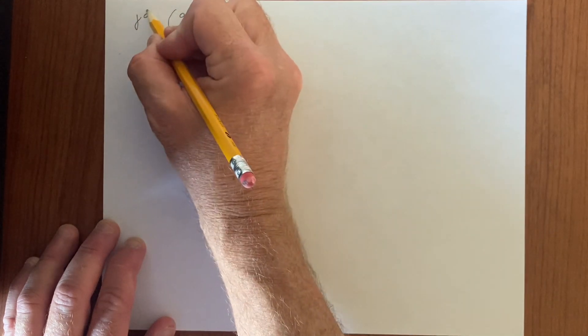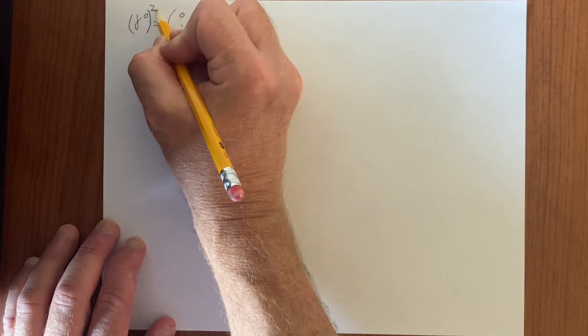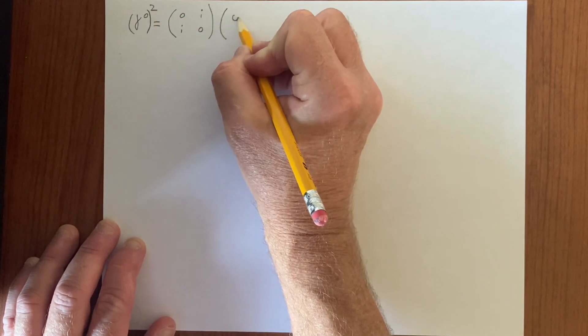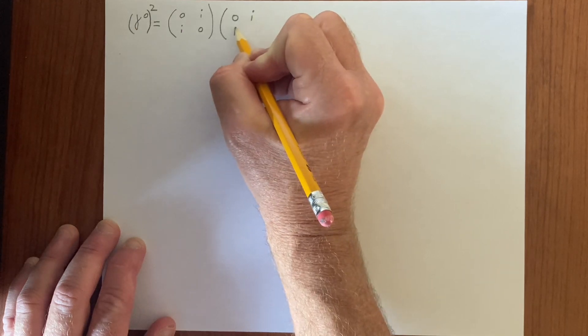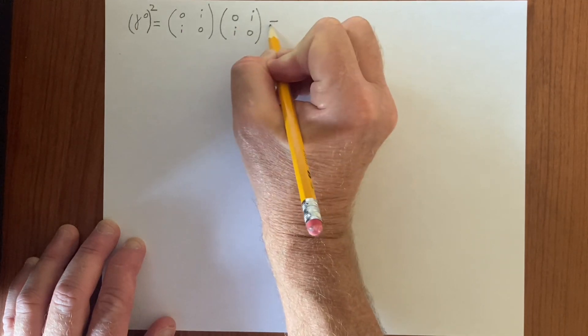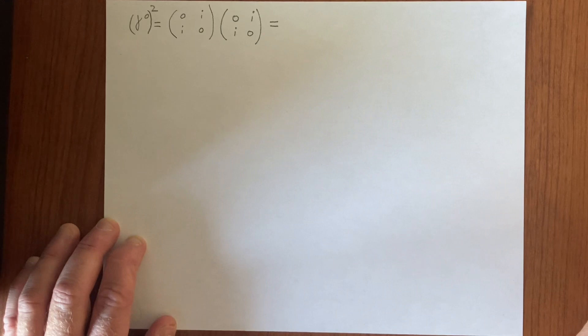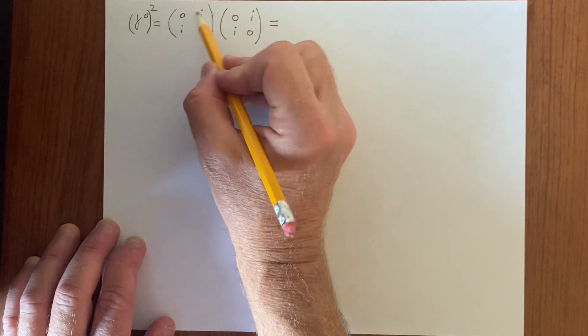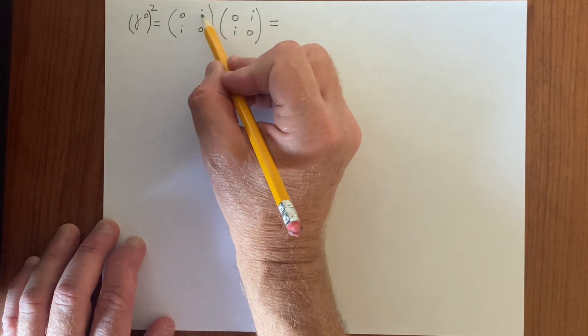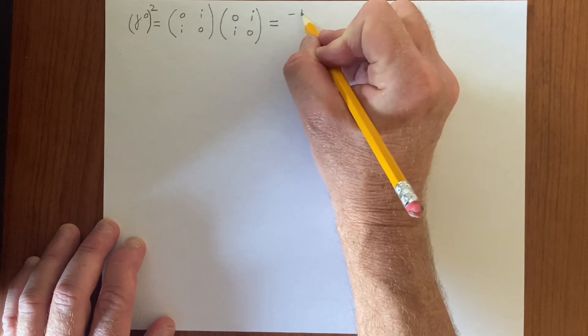And so when we do gamma 0 squared, we will do 0 i, i 0, and so we get 0 times 0, 0 plus i times i, that's minus 1 here.